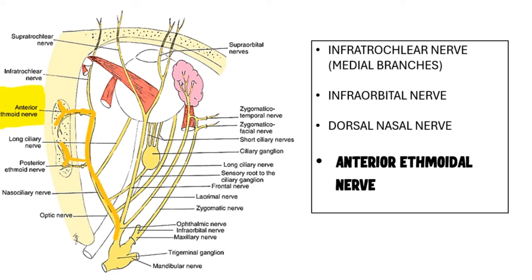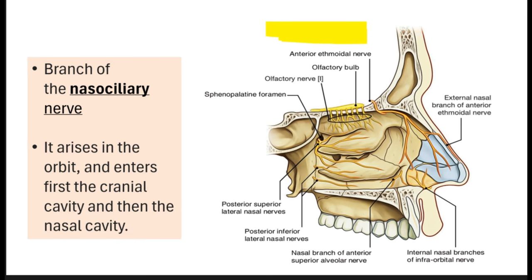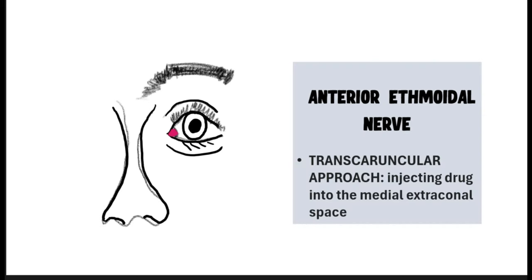Finally, let's discuss the anterior ethmoidal nerve. As the picture depicts, the anterior ethmoidal nerve is situated medially in the extraconal space. It is also a branch of the nasociliary nerve, which is a branch of the ophthalmic division of the trigeminal nerve. It arises in the orbit in the medial extraconal space, then enters the cranial cavity and then the nasal cavity. Since it doesn't become superficial for easy access, a transcarnicular approach is often employed to deposit the anesthetic drug in the medial extraconal space.